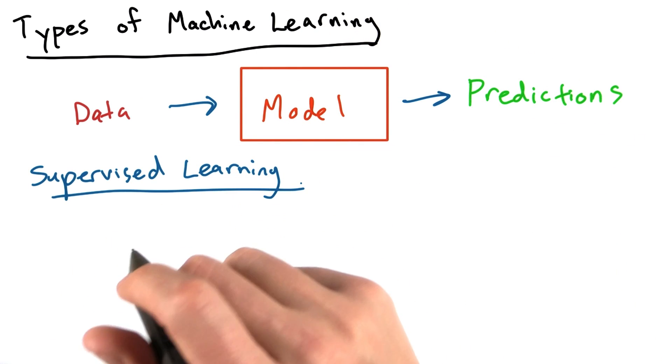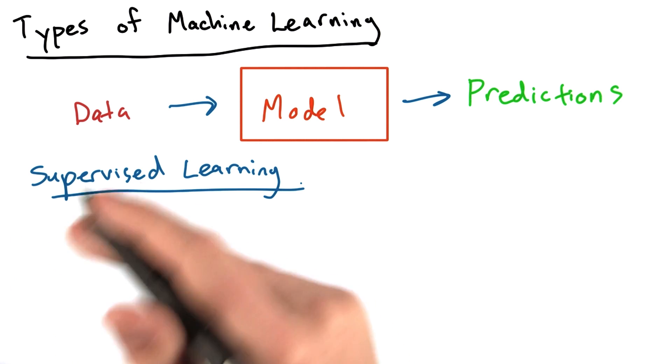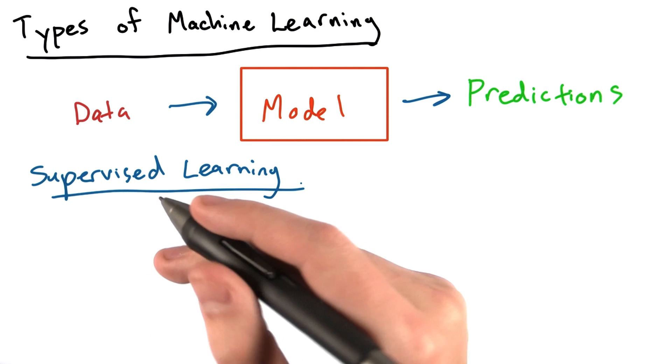In supervised learning, there are labeled inputs that we train our model on. Training our model simply means teaching the model what the correct answer looks like.